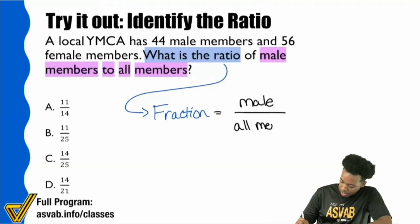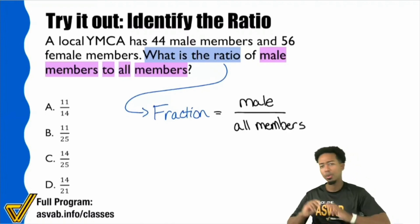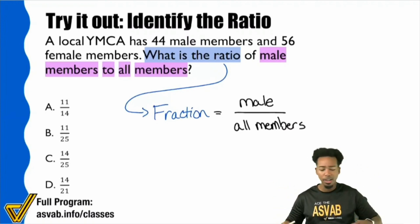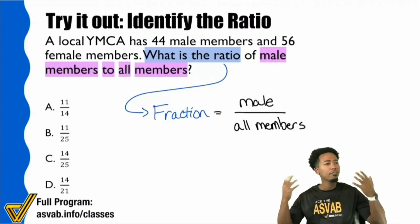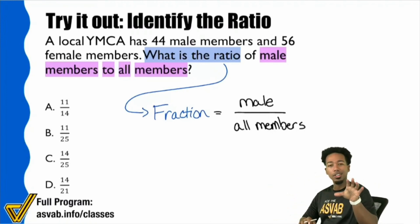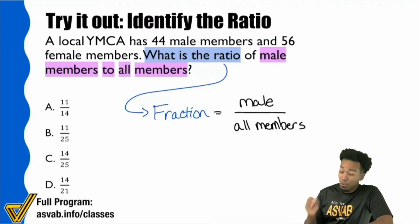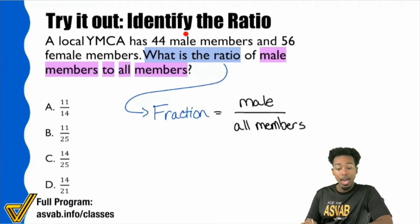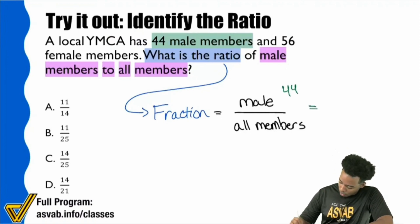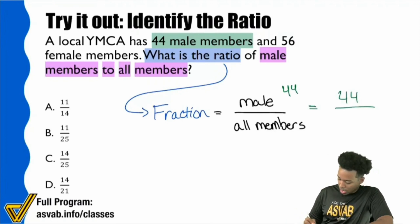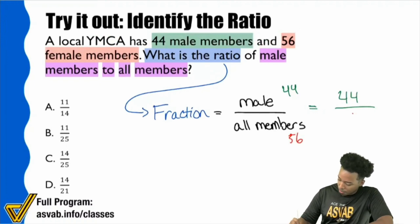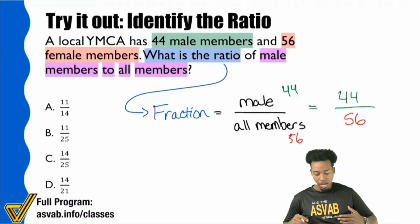If I'm taking a guess with my years of teaching experience — I've been teaching for a while — I'm willing to bet that if you're confused on this problem, you might have initially thought: the local YMCA has 44 male members, so I'm going to grab that 44. And then over here on the right side I see 56 female members, and I'm going to grab that instantly. So I did 44 over 56 and I think that that's correct.